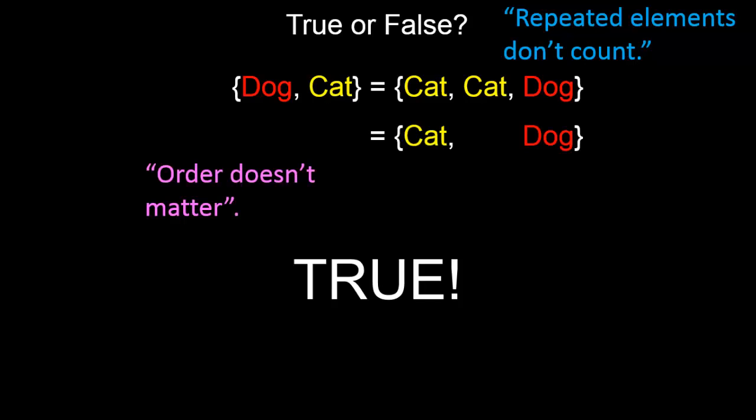The set on the right is simply the same as the set cat, dog. And because of our rule that order doesn't matter, the set on the right is the same as the set dog, cat. Hence the set on the left is indeed the same as the set on the right.